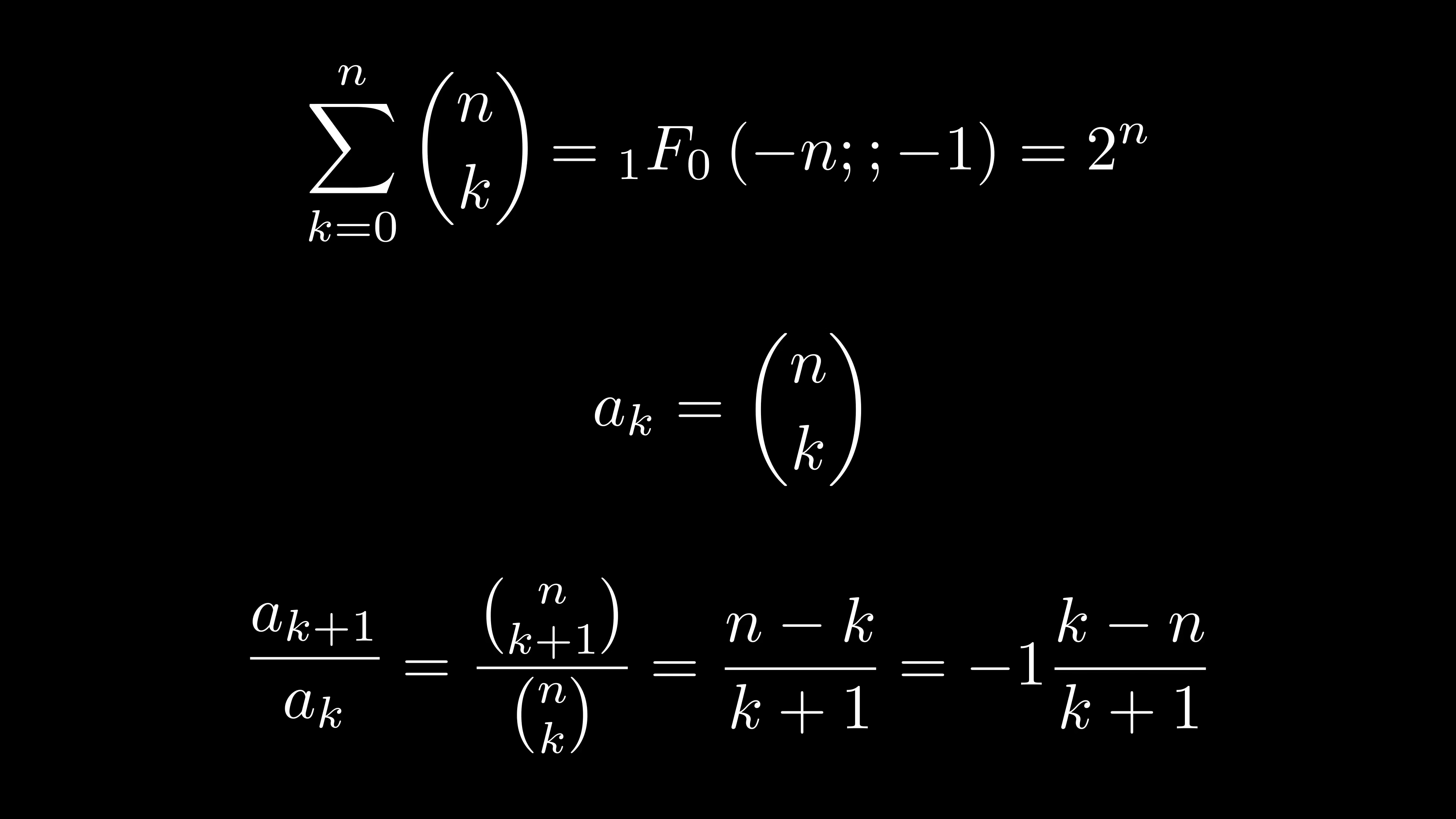A lot of summations are actually hypergeometric, even though it may not look like it at first. Take this sum, for instance. Let's take the successive term ratio, simplify, and voila! It's a rational function relative to k, what we are summing over, so it's hypergeometric.